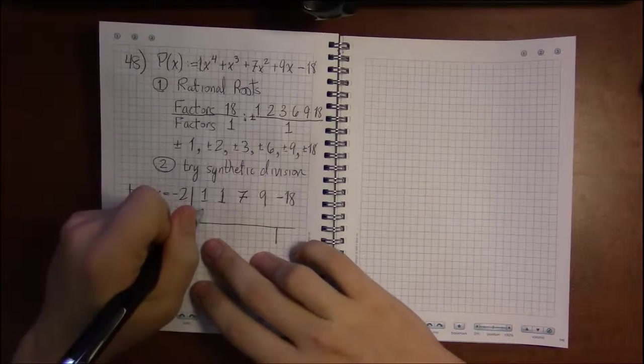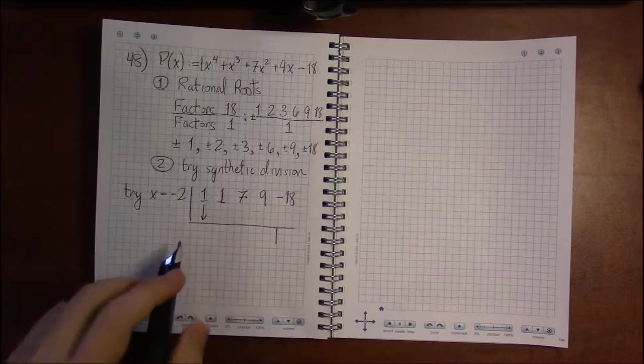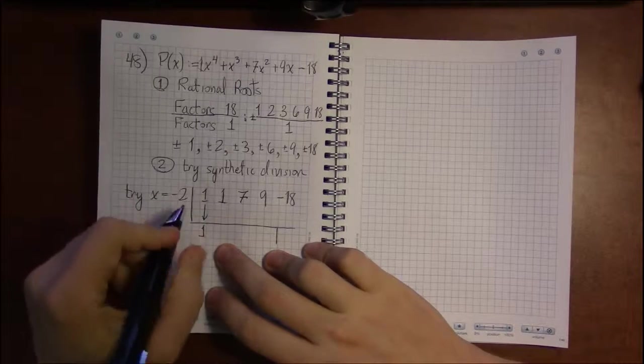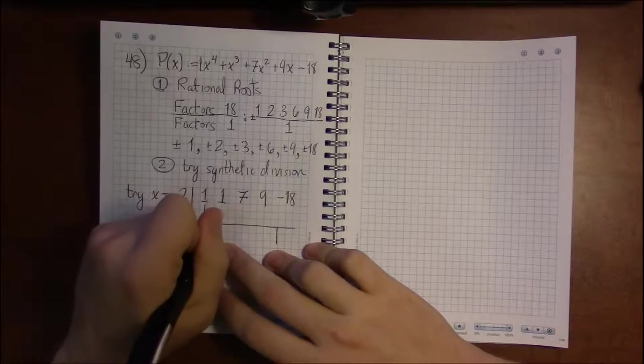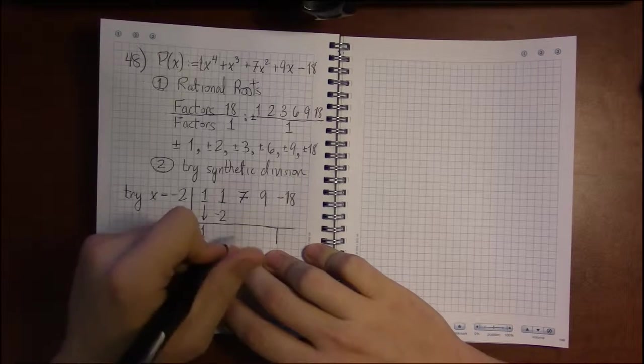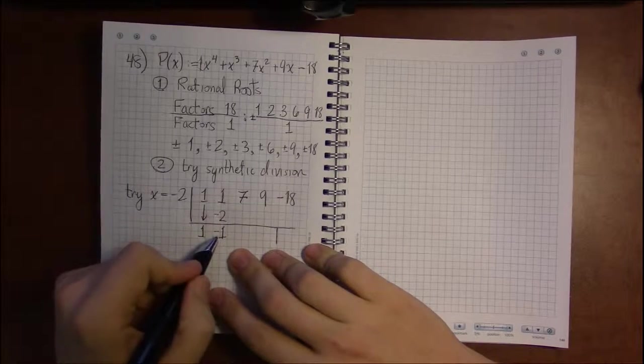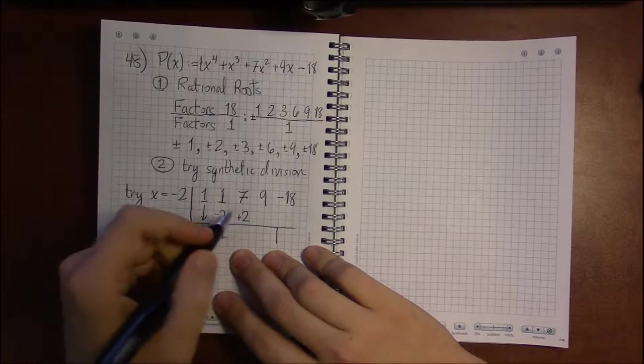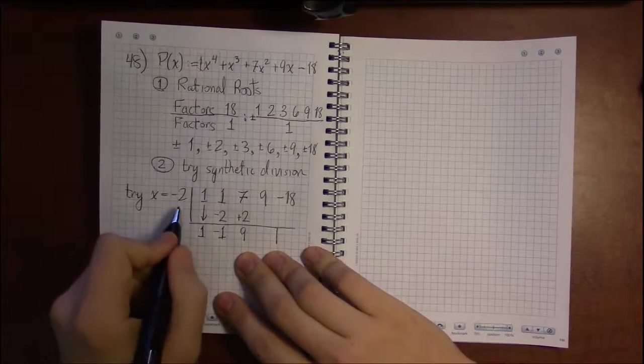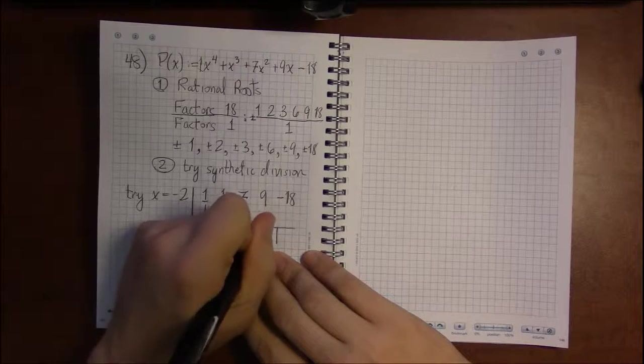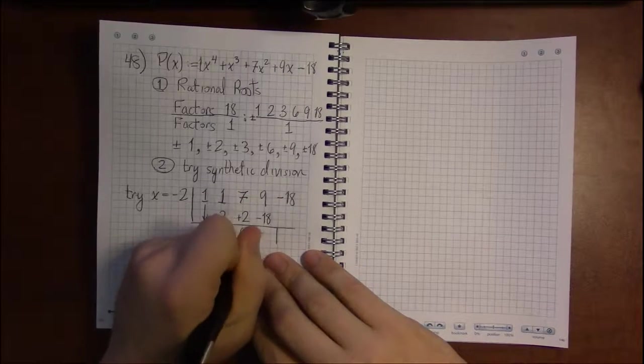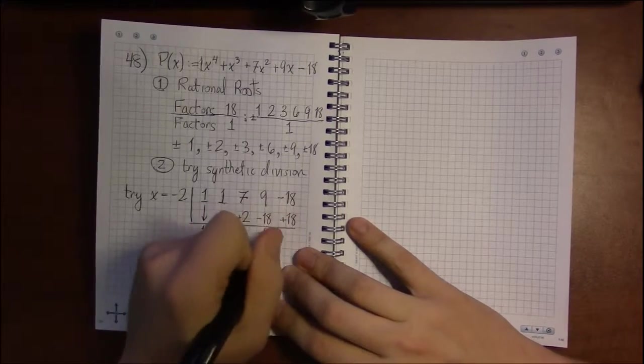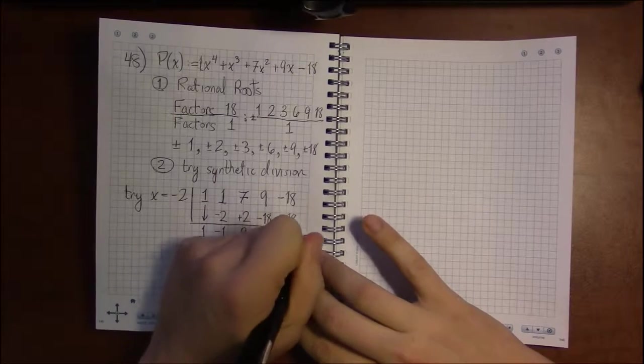Do synthetic division. Drop the leading coefficient, drop the 1. Multiply by minus 2: 1 times minus 2 is minus 2. Add to get minus 1. Multiply by minus 2, get plus 2. 7 plus 2 is 9. Minus 2 times 9 is minus 18. 9 plus minus 18 is minus 9. Minus 2 times minus 9 is plus 18. And when I add, I get 0. Excellent.